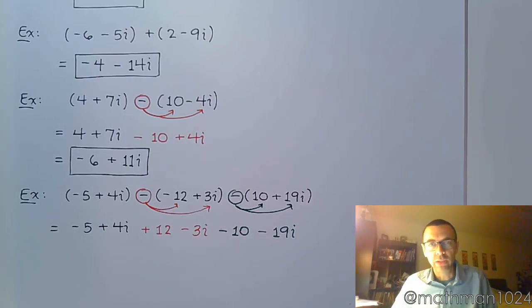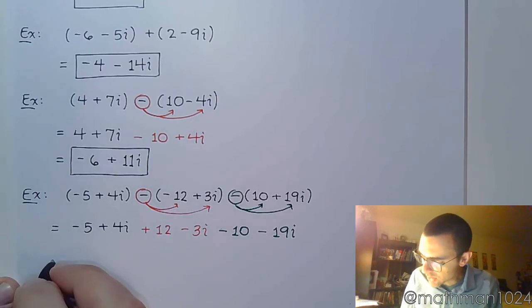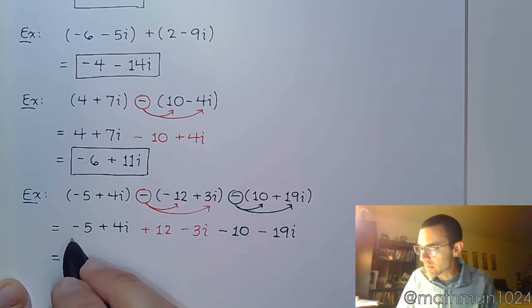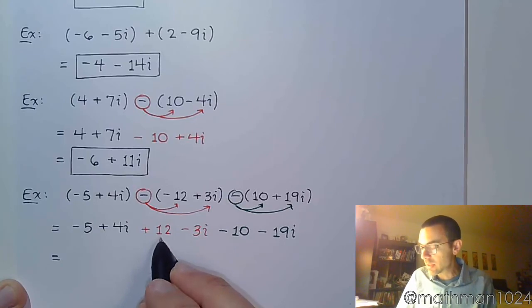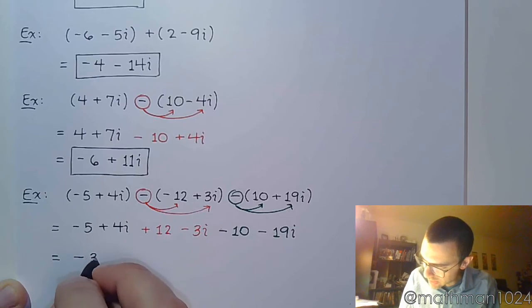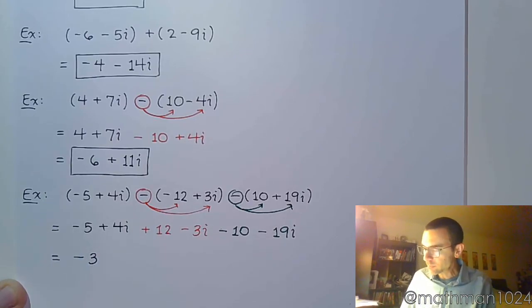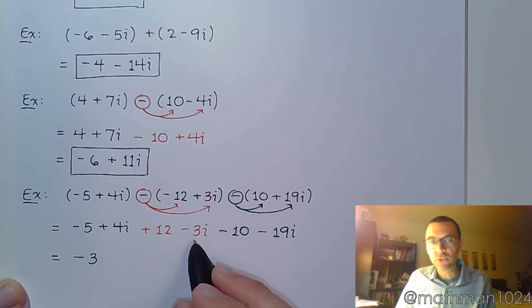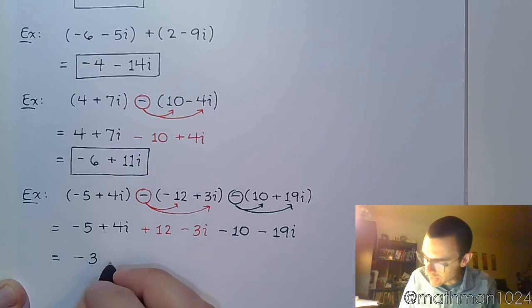And so now it's just a matter of combining like terms. You have more terms that you need to combine, but the process is still the same. So negative 5 and 12 is 7, positive 7 and negative 10 is negative 3. Now for the i's, positive 4i minus 3i is positive 1i, positive 1 minus 19 is minus 18i.